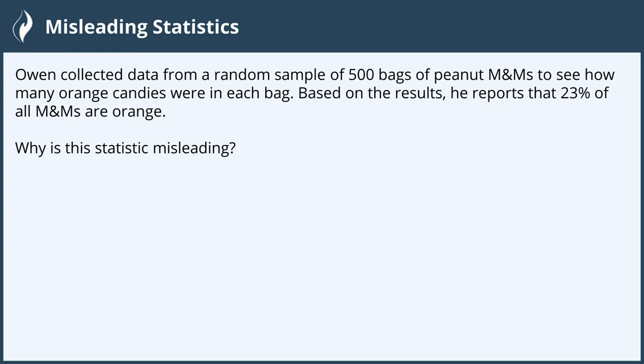At first it seems that it shouldn't be, considering that Owen sampled 500 bags seems a sufficient enough sample size. However, Owen's sample is biased. He reports that 23% of all M&Ms are orange and he only sampled peanut M&Ms. This does not have a clear representation of the entire population of all M&Ms. Had Owen's population been only peanut M&Ms, then it would have been sufficient.